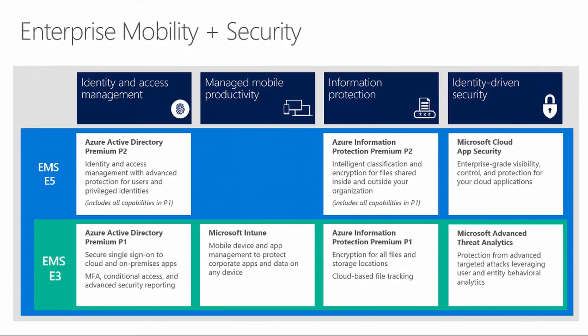Any organizations that had EMS originally with their current tenant will be converted to EMS E3, and E5 is a premium offering. EMS E3 has the major pillars of the original Enterprise Mobility Suite, including Azure Active Directory Premium, Microsoft Intune, Azure Information Protection (which is the new name for Azure RMS), and Microsoft Advanced Threat Analytics, or ATA.